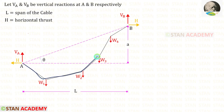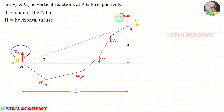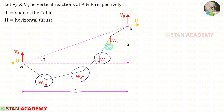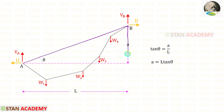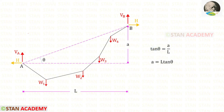Now let us consider a cable. Let us keep the span of the cable as L, H as the horizontal thrust, and Va and Vb as the vertical reactions at A and B respectively. W1, W2, W3, and W4 are the loads. Let us keep this angle as theta and this height as A. Let us take this triangle. In this triangle, tan theta equals A upon L. We can take L on the other side. Finally, for A, we will get L tan theta.